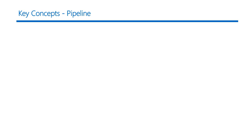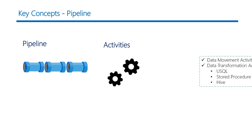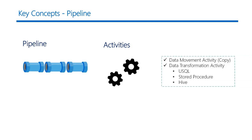To begin with pipelines, a data factory can have one or more pipelines. A pipeline is nothing but a logical grouping of activities that together perform a task. There can be two types of activities in a pipeline: a data movement or copy activity, and a data transformation activity — for example, a U-SQL, a stored procedure, or a Hive activity.